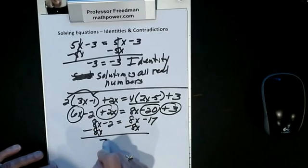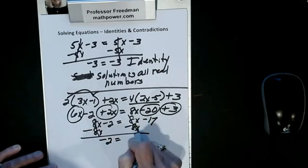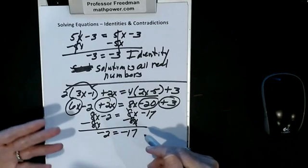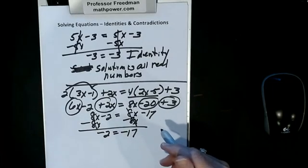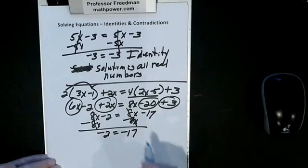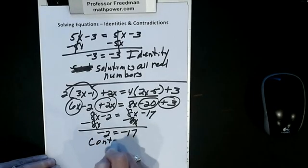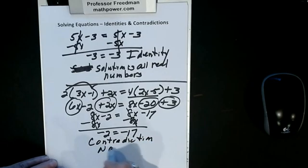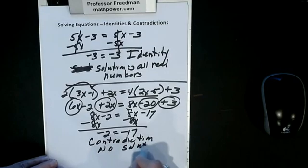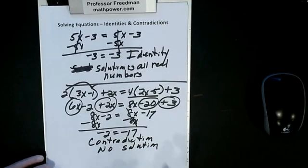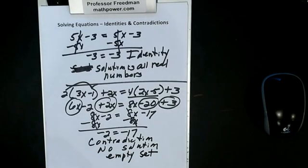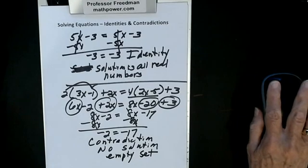Now I solve the equation with all x's on one side. I subtract 8x from both sides — they cancel out — and I get negative 2 equals negative 17. All my x's canceled out, but this is an impossible situation: negative 2 never equals negative 17. So this is called a contradiction — an impossible situation — and there is no solution. In set theory, we'd say it's an empty set.